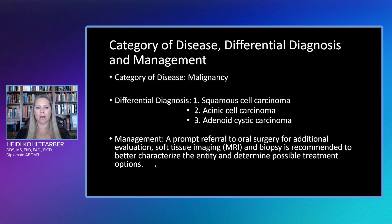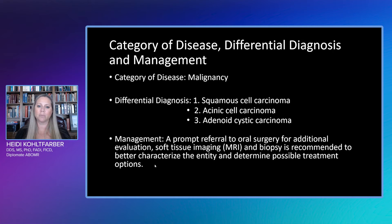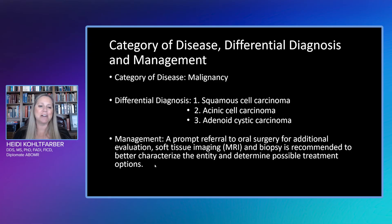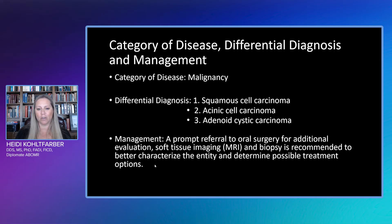So we're coming up with a differential — obviously in the category of malignancy. With this patient's history, age, and 40 years of smoking, we're going to think squamous cell carcinoma as our number one. Acinic cell carcinoma and adenoid cystic carcinoma are two and three. These carcinomas tend to show up in this particular region, and we'll see them in the hard palate. Management: prompt referral to oral surgery for evaluation and biopsy. We need soft tissue imaging — MRI — to know where the actual margins are and to rule out involvement in the airway space, which will help put together the treatment plan.